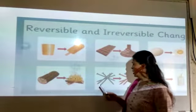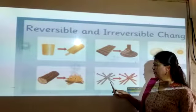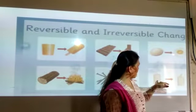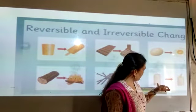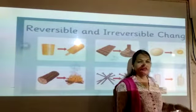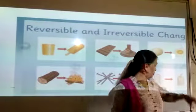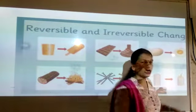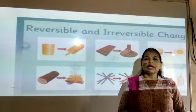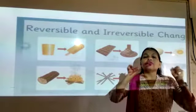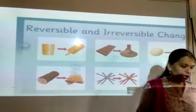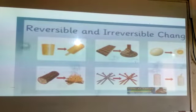Here we have to see the candle. The candle can start melting. Once melted, it cannot be converted back into the original shape of the candle. That is an example of an irreversible change.